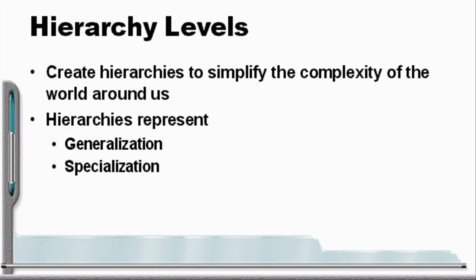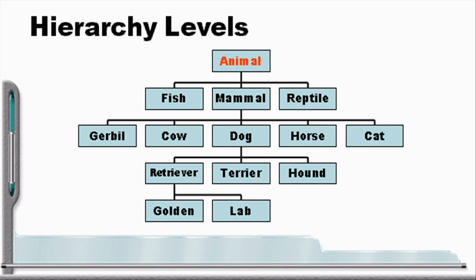When we look at the animal kingdom and the hierarchy that has been simplified tremendously in this diagram, we see that reptiles and mammals and fish specialize all of the common features of animal. And similarly, dogs, cows, horses, cats, and gerbils specialize what it means to be a mammal.